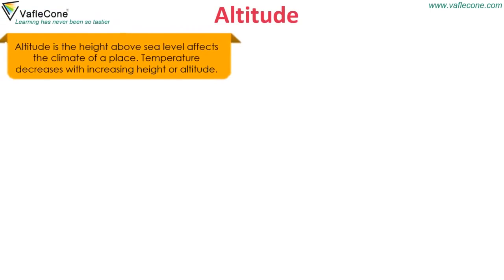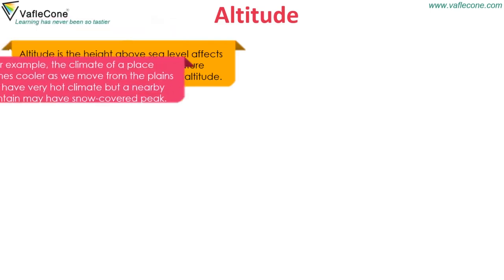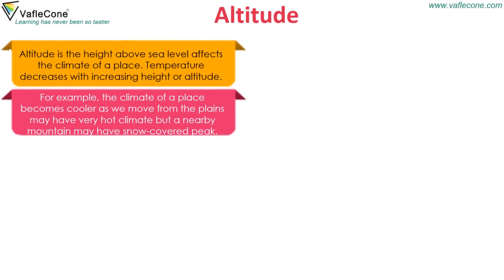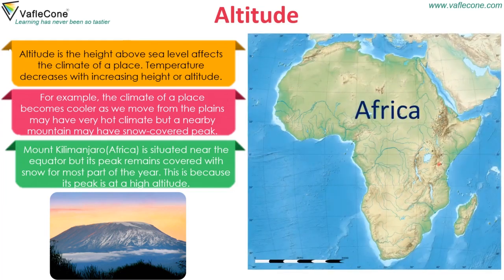Altitude — the height above sea level — affects the climate of a place. Temperature decreases with increasing height or altitude. For example, the climate of a place becomes cooler as we move from the plains. Plains may have a very hot climate, but a nearby mountain may have a snow-covered peak. Mount Kilimanjaro in Africa is situated near the equator but its peak remains covered with snow for most part of the year, because its peak is at high altitude.